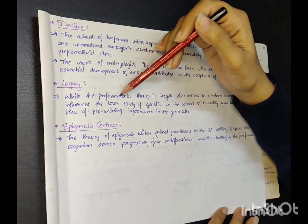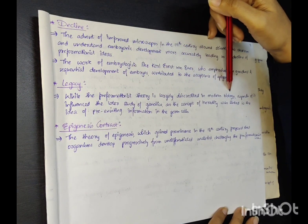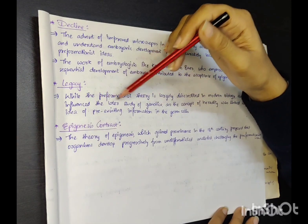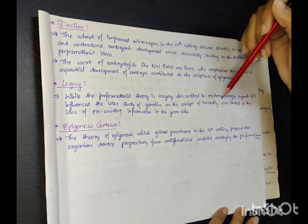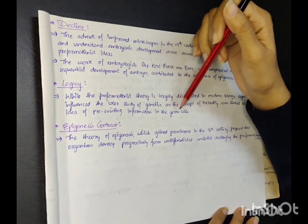Legacy: While the pre-formationist theory is largely discredited in modern biology, aspects of it influenced the later study of genetics, as the concept of heredity was linked to the idea of pre-existing information in the germ cells.